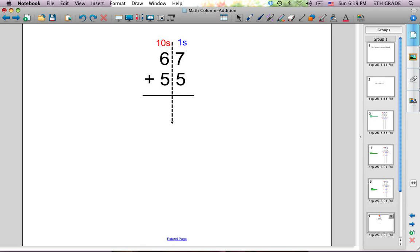Let's try an easier problem. I've already set up the ones column and the tens column. Now I can add: 7 plus 5 is 12, and 6 plus 5 is 11.